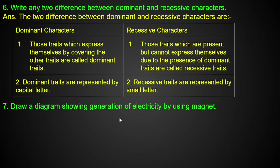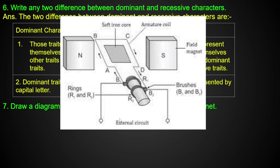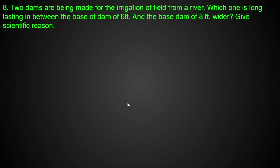Draw a diagram showing generation of electricity using a magnet. These figures show how a magnet is used to generate electricity. You can see the two dams being represented in the diagram.